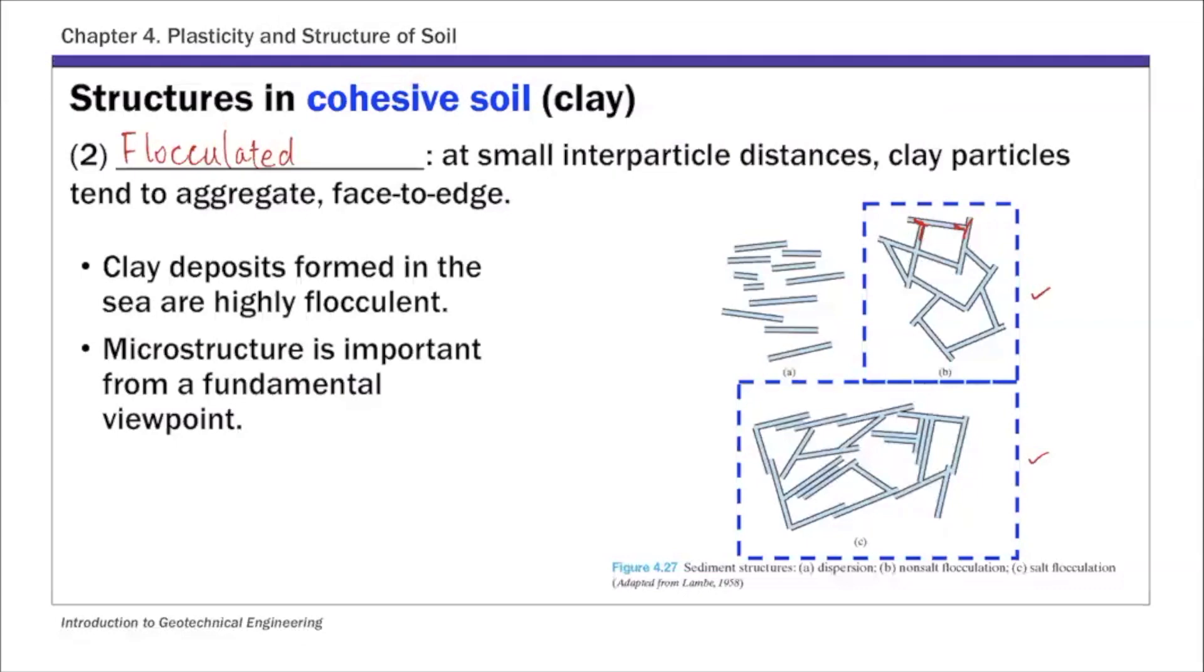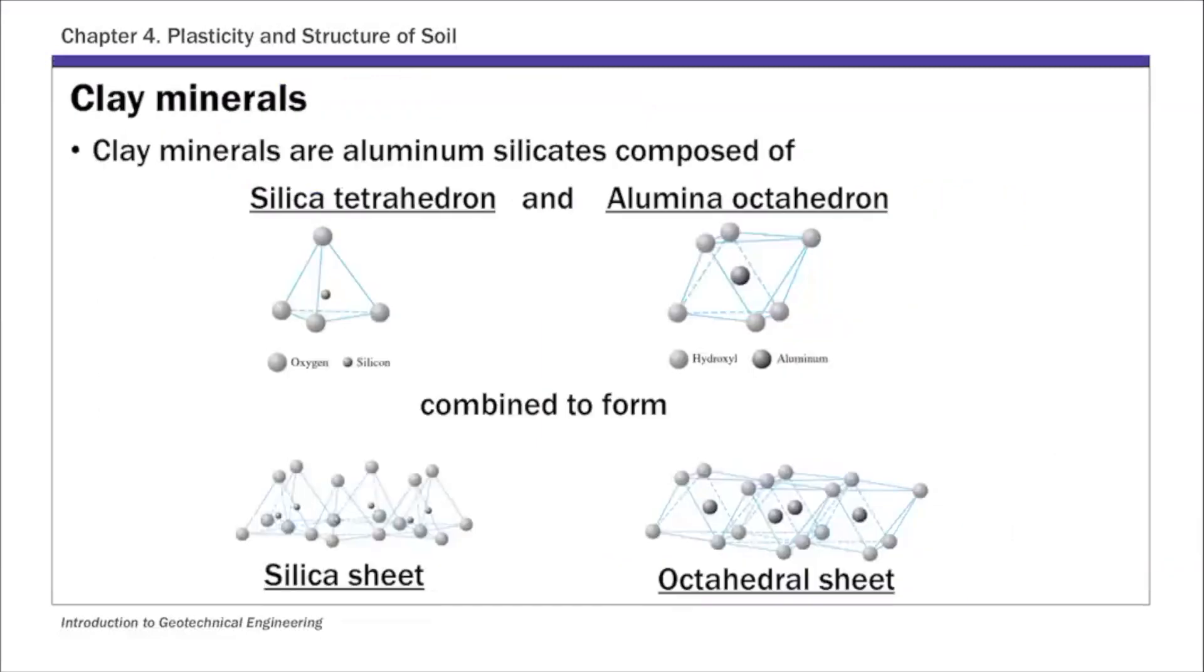The type of structure you see are affected by the chemical and mechanical environment and also clay minerals. Clay minerals are basically aluminum silica composed of silica tetrahedron and alumina octahedron, which are combined to form silica sheet and octahedron sheet. So these are clay mineral structures.